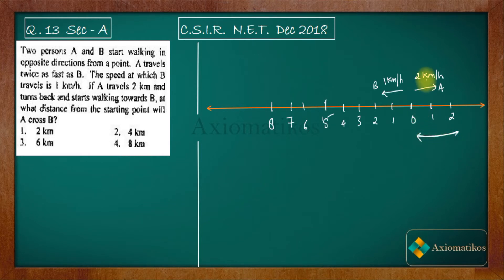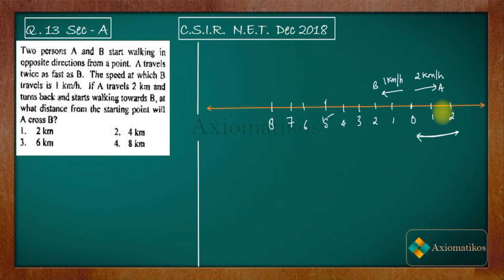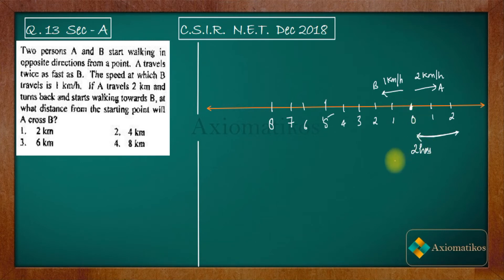The speed of A is two kilometers per hour, so after traveling two kilometers he turns back. The time taken to go from the start to the two-kilometer point is one hour. Coming back takes one more hour. So person A takes two hours in total to go from O to the two-kilometer mark and return to the starting point.